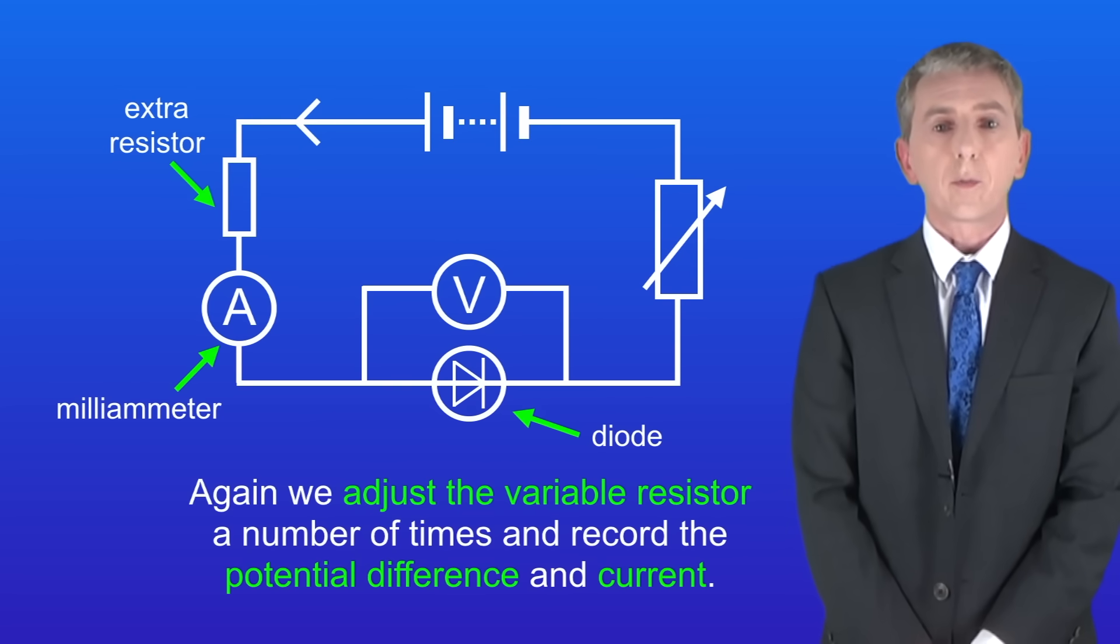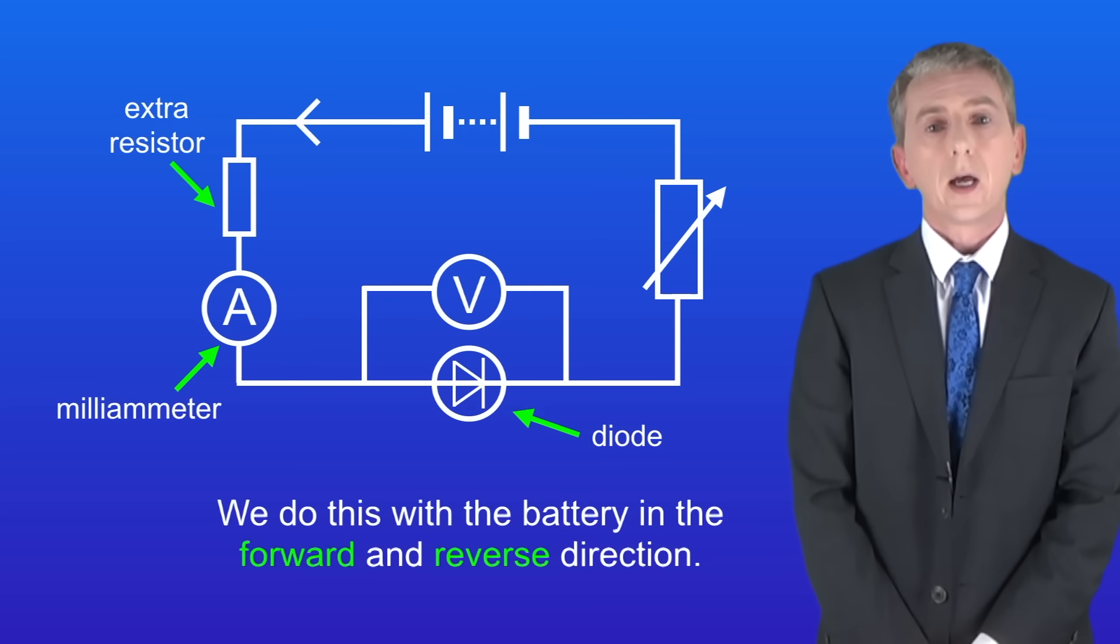So again we adjust the variable resistor a number of times and record the potential difference and current. And we do this with the battery in the forward and reverse direction.